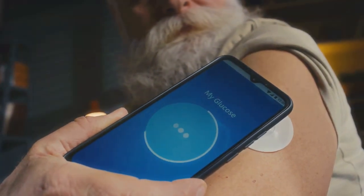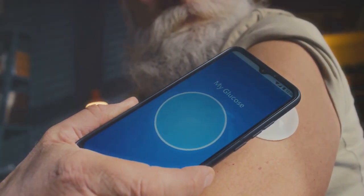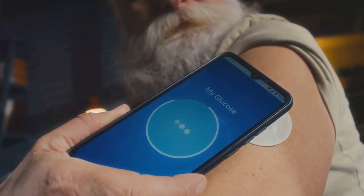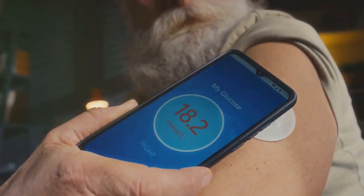Diabetics, for example, could benefit from smart tattoos that continuously monitor glucose levels. This would eliminate the need for frequent finger pricks and provide real-time data to manage their condition effectively.